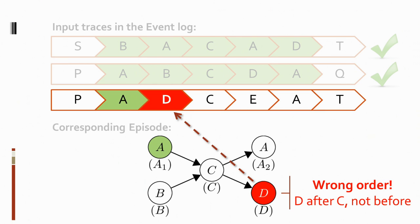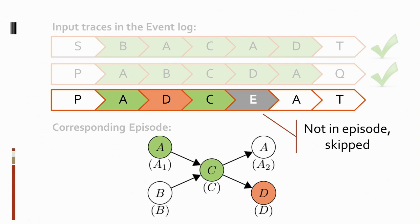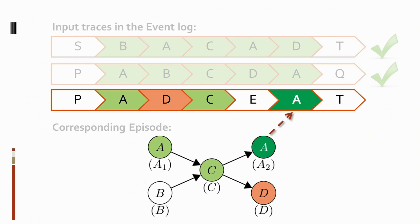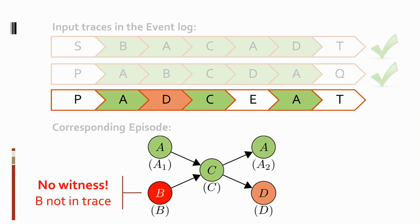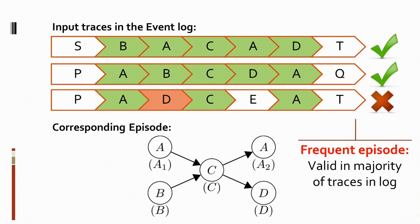For the sake of this example, we continue. Ignoring the D for now, we conclude that a C occurs in the right order with respect to the first A. The E encountered in the trace is not part of the episode, so we ignore it. And the second A is related just as before. Note that we did not find a witness for node B in this trace — this is a second violation of occurrence. Hence, this episode does not occur in the third trace. In the end, we only report frequent episodes — that is, the episodes that occur in the majority of the traces in the event log.